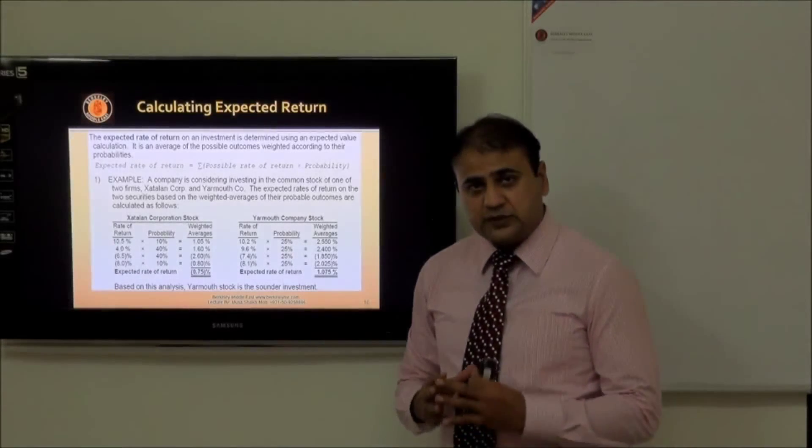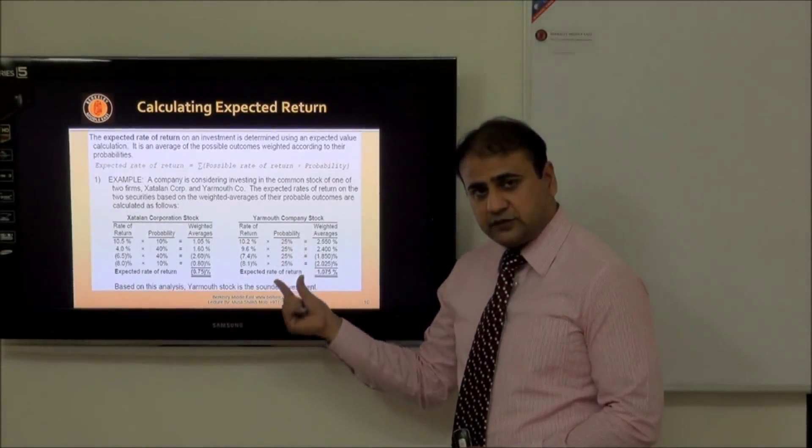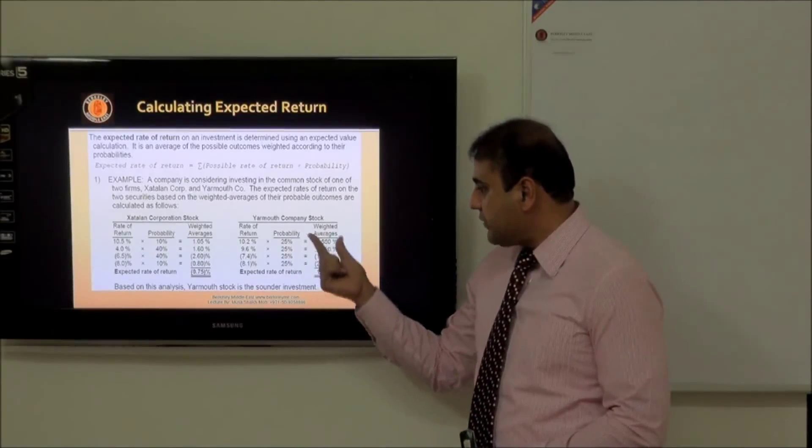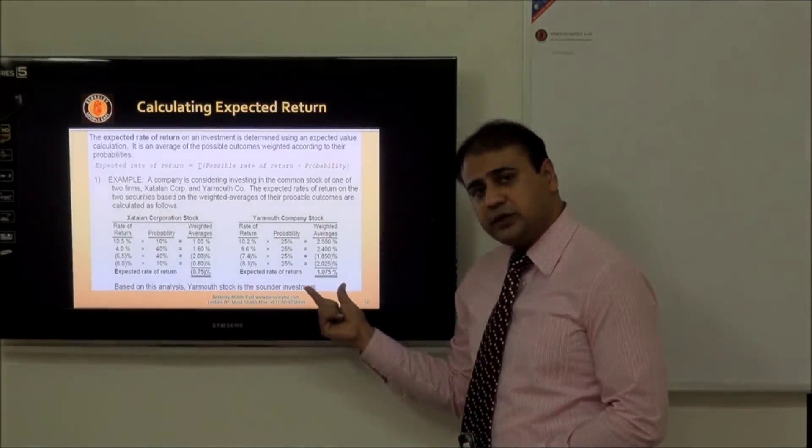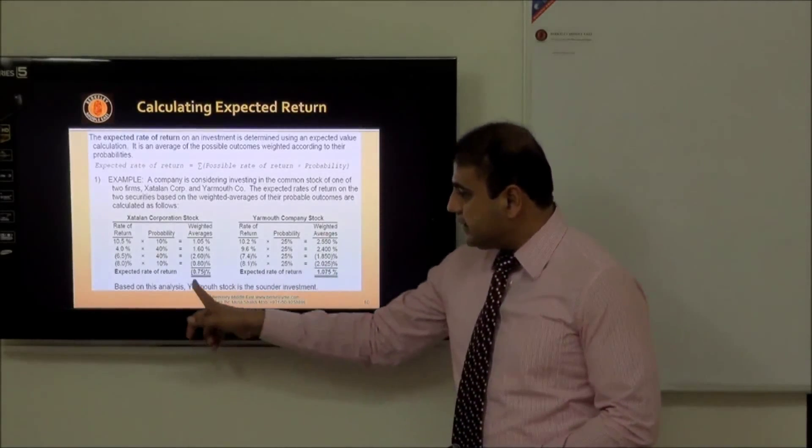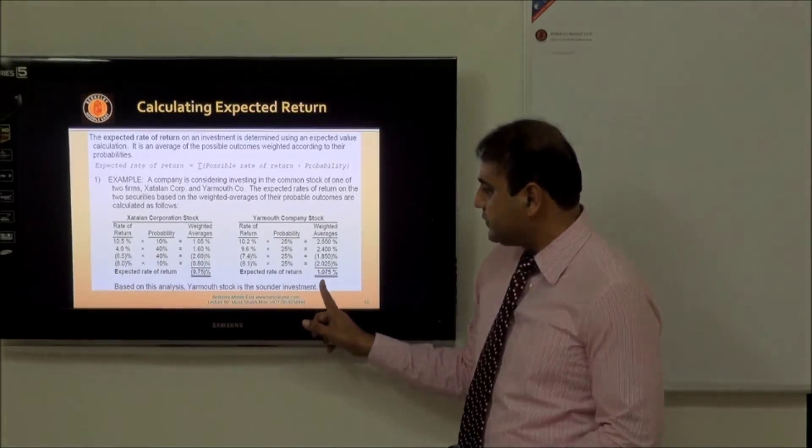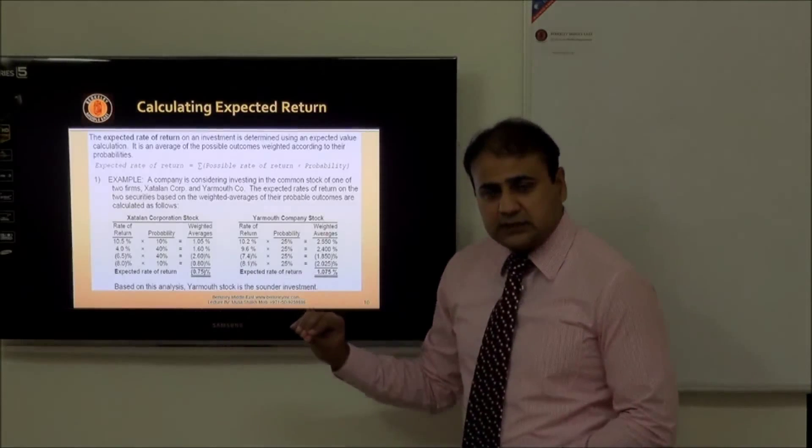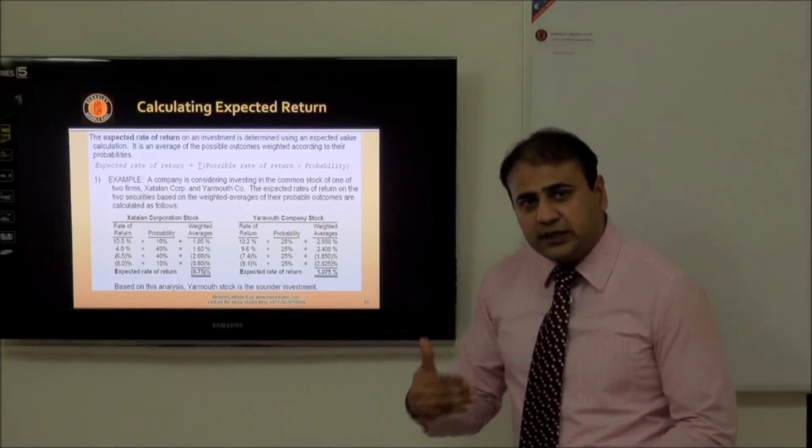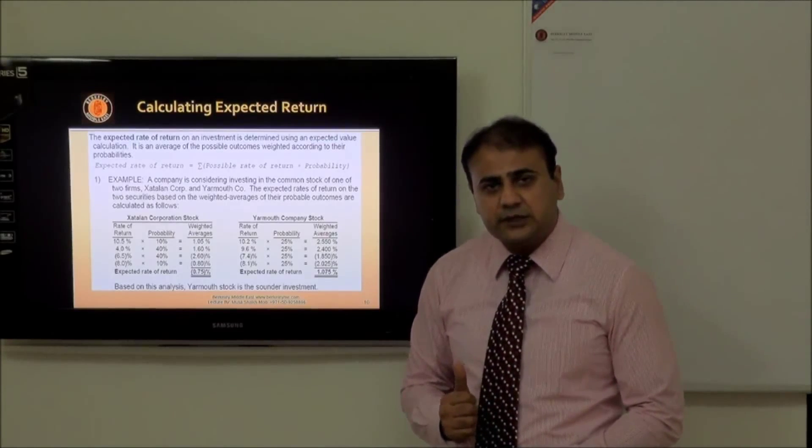Same way you have to see stock Y - the rate of return is given here. Then you have to multiply with the probability, you will get the weighted average results, and the total would be the expected rate of return. You can see here we have 0.75 percent, this is 1.05 percent. So based on the analysis we can conclude that the Y stock is the sounder investment because it has high expected rate of return.